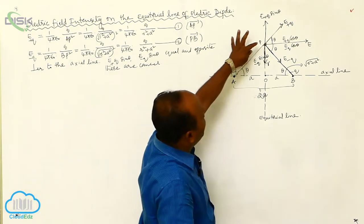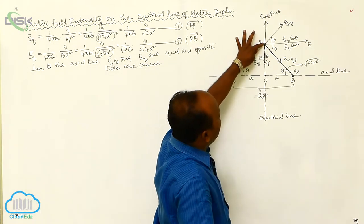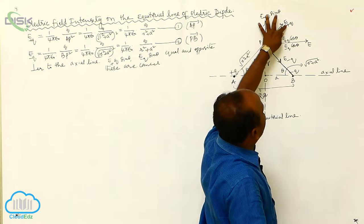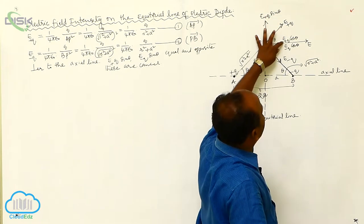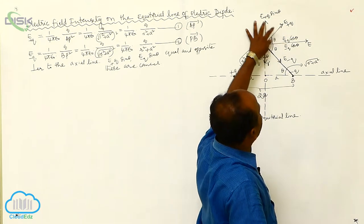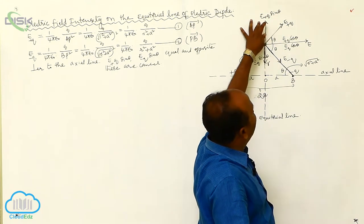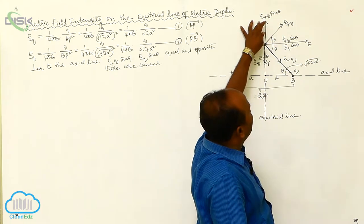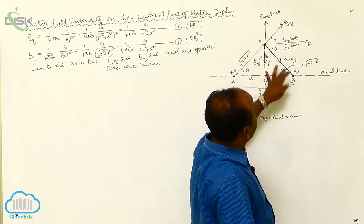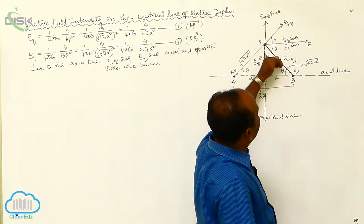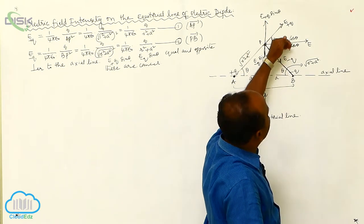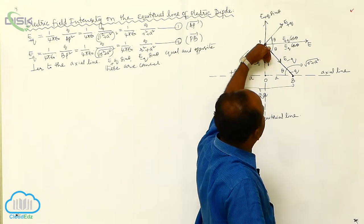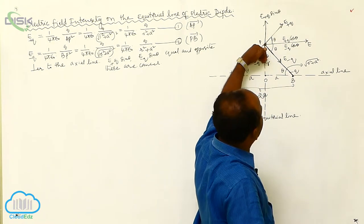Now, at this point, EF plus Q is resolved into two components: EF plus Q cos theta and EF plus Q sine theta. EF minus Q is also resolved into two components: EF minus Q cos theta and EF minus Q sine theta.